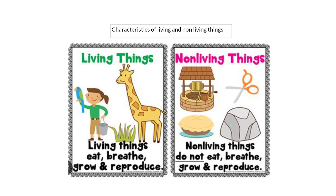Let's begin by talking about the characteristics of living and non-living things. What do we mean by the word characteristics? It is the description for living things and non-living things. How do we describe living things? Living things eat. Living things breathe. Living things grow. And living things reproduce. What do we mean by the word reproduce? That they can make babies.